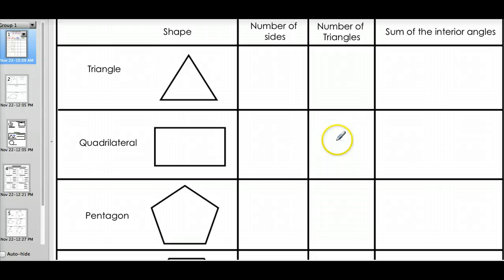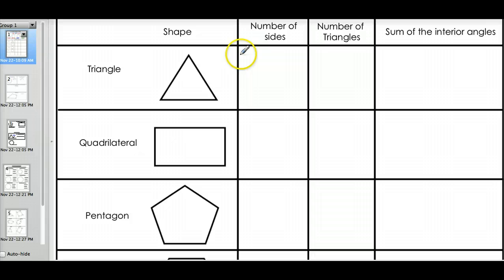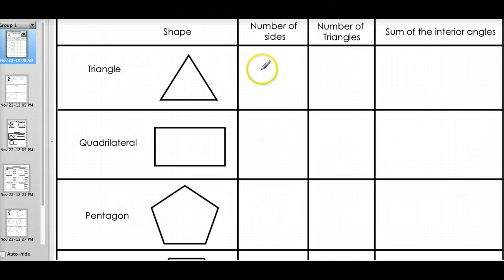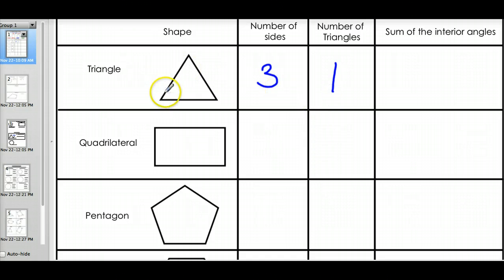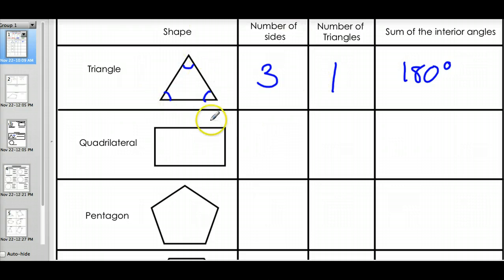Now let's start talking about the angles. There's a cool little trick you can use to calculate the sum of the interior angles of a polygon. Let's start with a triangle. A triangle has three sides, and it's one triangle in the picture. If you were to sum up the three angles, the sum of the angles in a triangle is always 180 degrees. The sum of the interior angles of a triangle is always 180. Always.